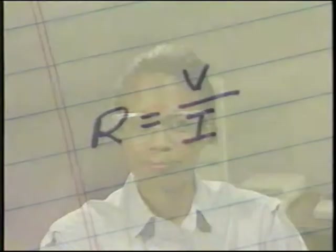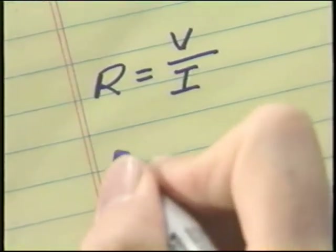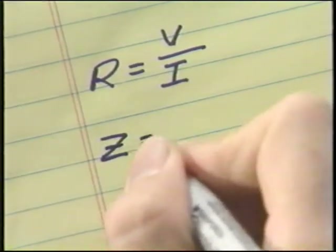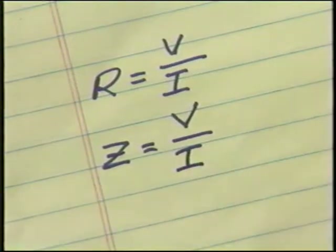You should now be able to calculate the total current and voltage in a parallel RLC circuit. Each mathematical operation is based on fundamentals learned previously. Now let's see how to calculate the impedance for a parallel RLC circuit. You can use the same Ohm's law relationship, Z equals V divided by I, that has been used for all other AC circuits.